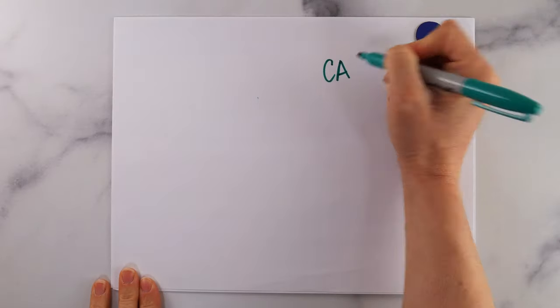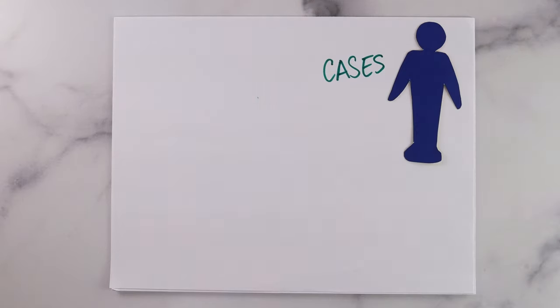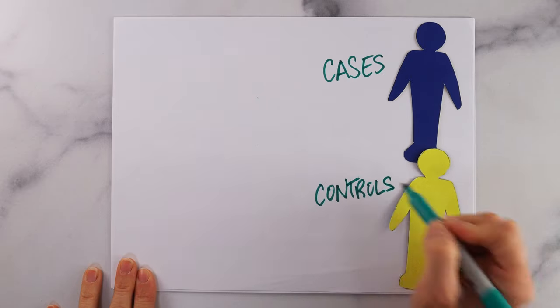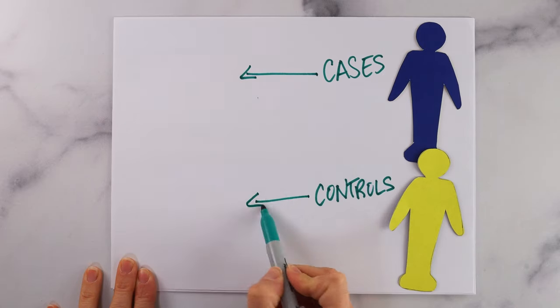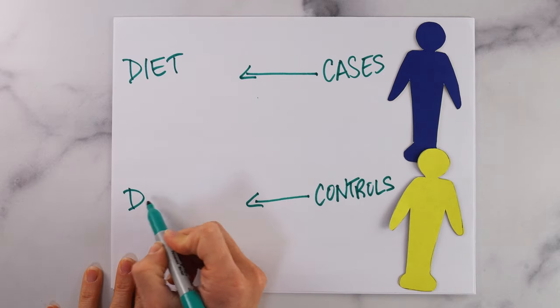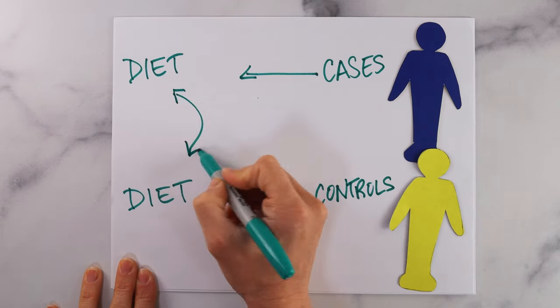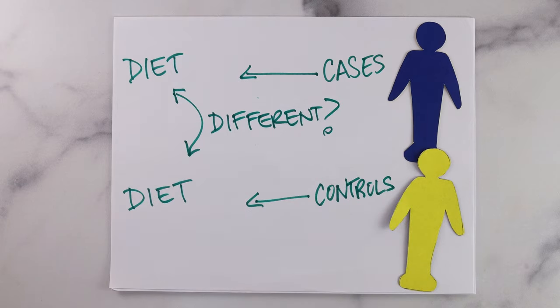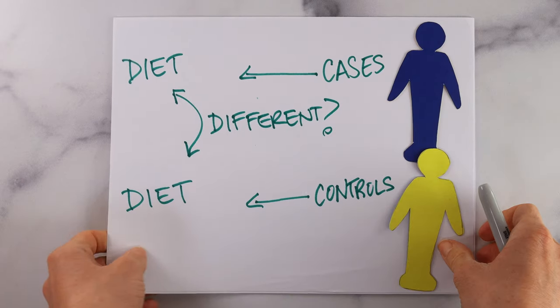The idea here is that the researchers are looking backwards to see if there are any differences in diet between the cases and the controls in the past that may have been hypothetically contributing to the development of the disease.